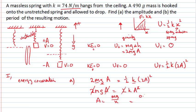So I'll put some numbers in there. 0.49 times 9.8 divided by 74, I will get 0.0649, which is really 6.5 centimeters as my amplitude. So that's the answer for part A.